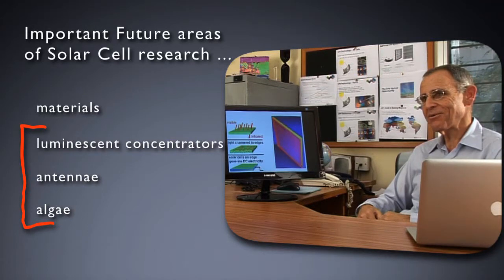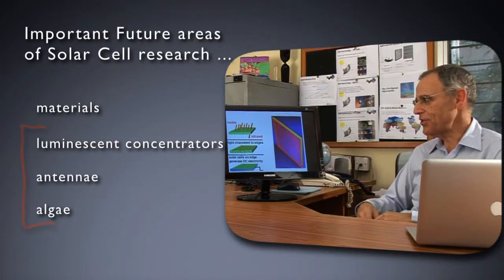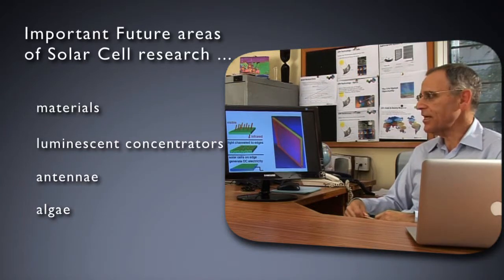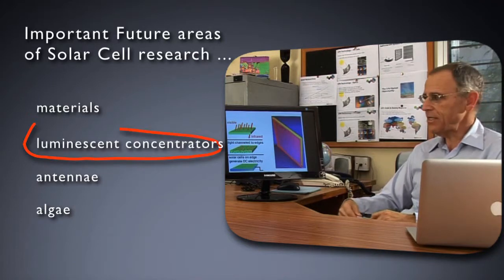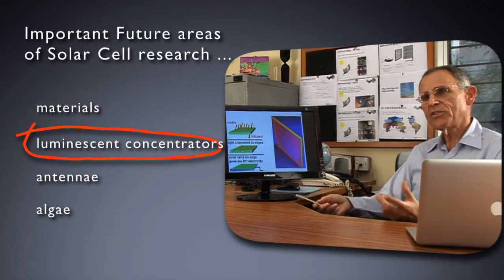Therefore, it poses a wonderfully appealing challenge to physicists. The concept of a luminescent concentrator is to have a totally stationary device, which can take sunlight and tailor it in two ways. Tailor the spectrum to the solar cells and increase the concentration.